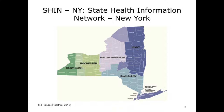Currently, there are eight RIOs in New York State — one in the Buffalo region, the Rochester region, Syracuse region, Albany and northern New York State region, Hudson Valley, and Downstate or metropolitan area of New York State, where half of the state's population lives. In this area, there are three separate regional health information organizations. New York State is notable in that it has invested far more in these activities than any other state.